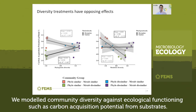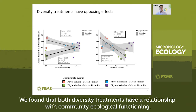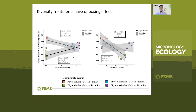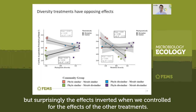We modeled community diversity against ecological functioning, such as carbon acquisition potential from substrates. We found that both diversity treatments have a relationship with community ecological functioning, but surprisingly the effects inverted when we controlled for the effects of the other treatments.